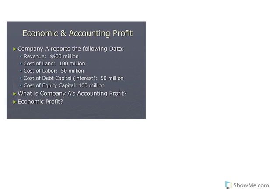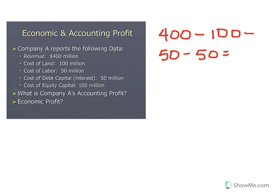Let's say I gave you data for a corporation and asked you to calculate both accounting and economic profit. First, calculate accounting profit: total revenue was $400 million. Subtract all explicit costs — rent on land was $100 million, labor wages were $50 million, and interest on debt was another $50 million. The accounting profit was therefore $200 million.